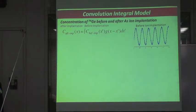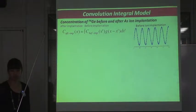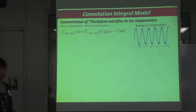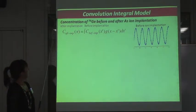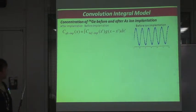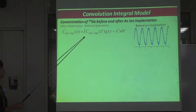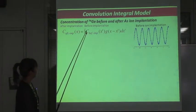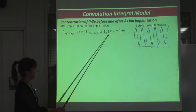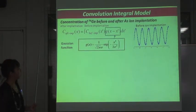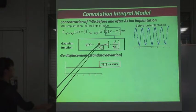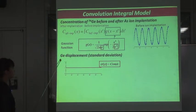I will explain the simulation model we used for this study, which is defined as a convolution integral model. The concentration of 74Ge after arsenic implantation is described by a convolution integral of the concentration of 74Ge before implantation and a Gaussian function. The Gaussian function has a standard deviation sigma, which represents Germanium displacement due to implantation.